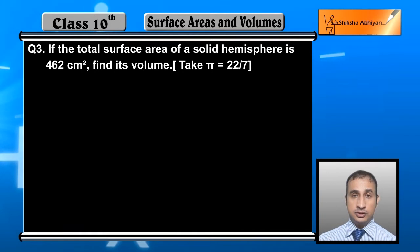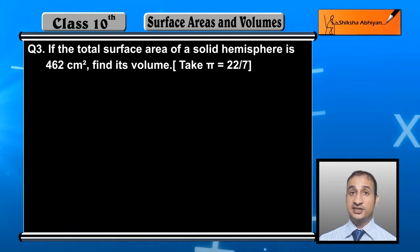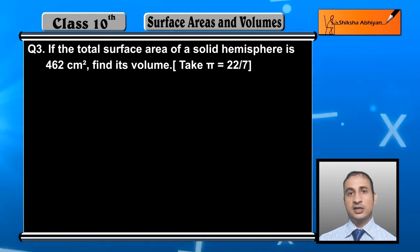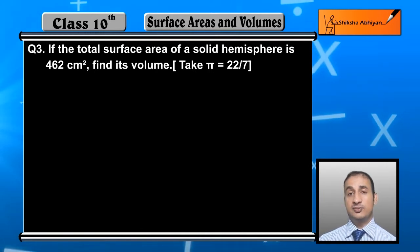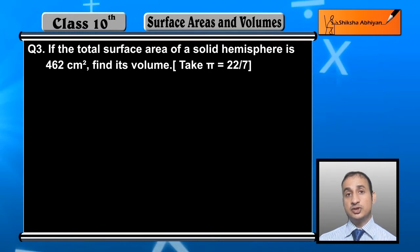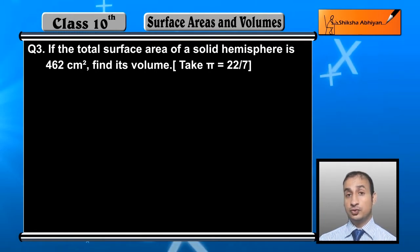Here we have a solid hemisphere whose total surface area is 462 centimeter square. We know that the total surface area is 3πr². So we have 3πr² = 462, and we need to find the value of r.